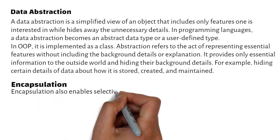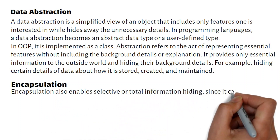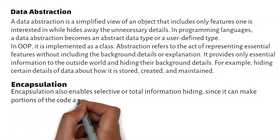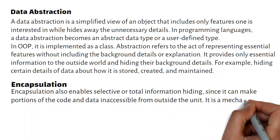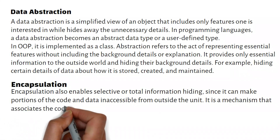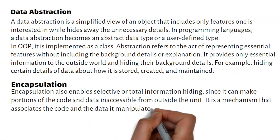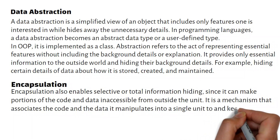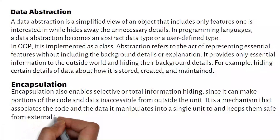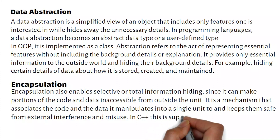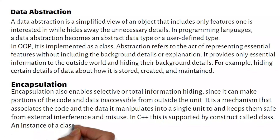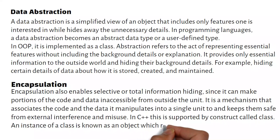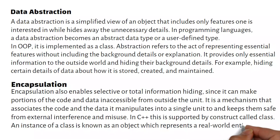Encapsulation also enables selective or total information hiding, since it can make portions of the code and data inaccessible from outside the unit. It is a mechanism that associates the code and the data it manipulates into a single unit, and keeps them safe from external interference and misuse. In C++, this is supported by a construct called class. An instance of a class is known as an object, which represents a real-world entity.